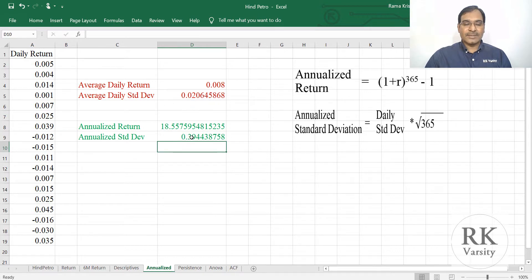So this is in decimals, you can convert this into a percentage by multiplying with 100. This equals to 0.39 times 100. So 39% is the standard deviation and 18.55% is the annualized return of this particular stock.